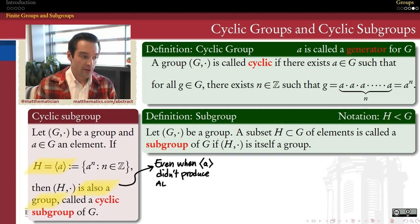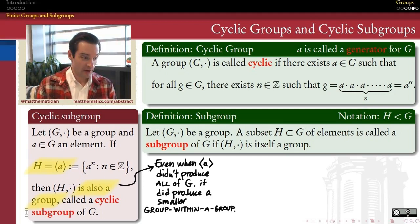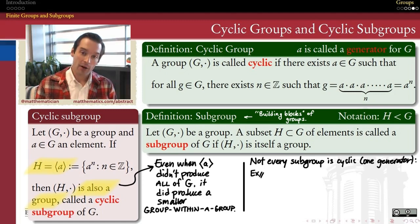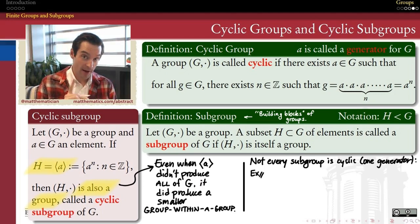We noticed that even when the set of powers of an element doesn't produce all of G, it does produce a subgroup. We can show that the set of all powers of a given element inside a group forms a subgroup of that larger group — a group within a group. One reason we like to study subgroups is that they give us a clue to the structure of larger groups: understanding how subgroups relate to their parent groups is a good way to understand how larger groups are built from smaller ones.